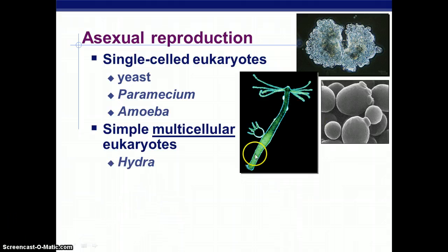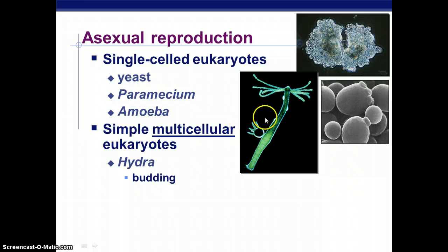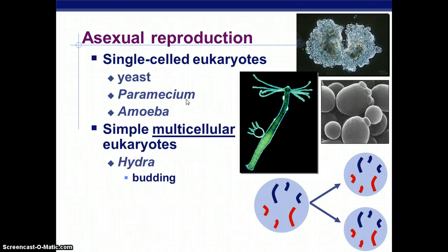This is a picture of a hydra. Hydra actually use a specialized form of asexual reproduction called budding — here you can see a small bud. This hydra has used mitosis to create an entirely new individual; eventually this bud will pinch off and become an adult hydra. So it's important to remember that in mitosis you end up with two genetically identical cells.